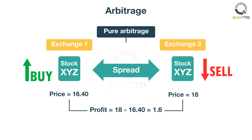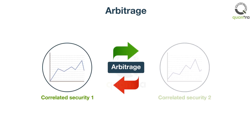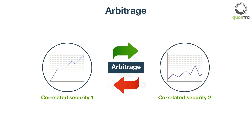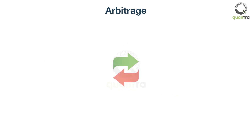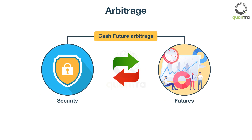Arbitrage is most profitable when the arbitrage spread is wide. Similarly, arbitrage can also occur between two correlated securities. An arbitrage opportunity arises when the prices of correlated instruments diverge from their normal relation. Additionally, arbitrage is also possible between a security and its futures contract and is known as cash future arbitrage.